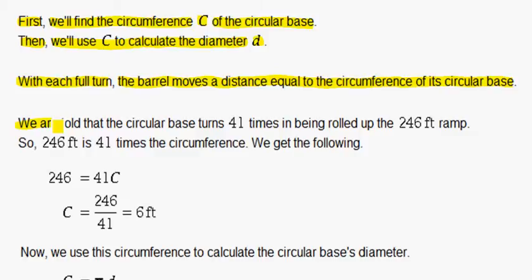We are told that the circular base turns 41 times in being rolled up the 246 foot ramp. So, 246 feet is 41 times the circumference. We get the following.